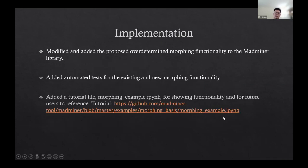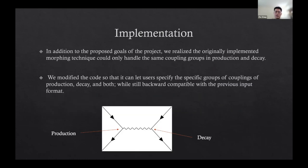For implementation, I modified and added the proposed overdetermined morphing functionality to the MadMiner library. I also added automated tests for both existing and new morphing functionality, and added a tutorial file for future users. In addition to the proposed goals, when doing the implementation we realized that the original morphing technique could only handle the same coupling groups in production and decay. So we also modified the code to let users specify specific groups of production, decay, or both, while remaining backward compatible with the previous input format.